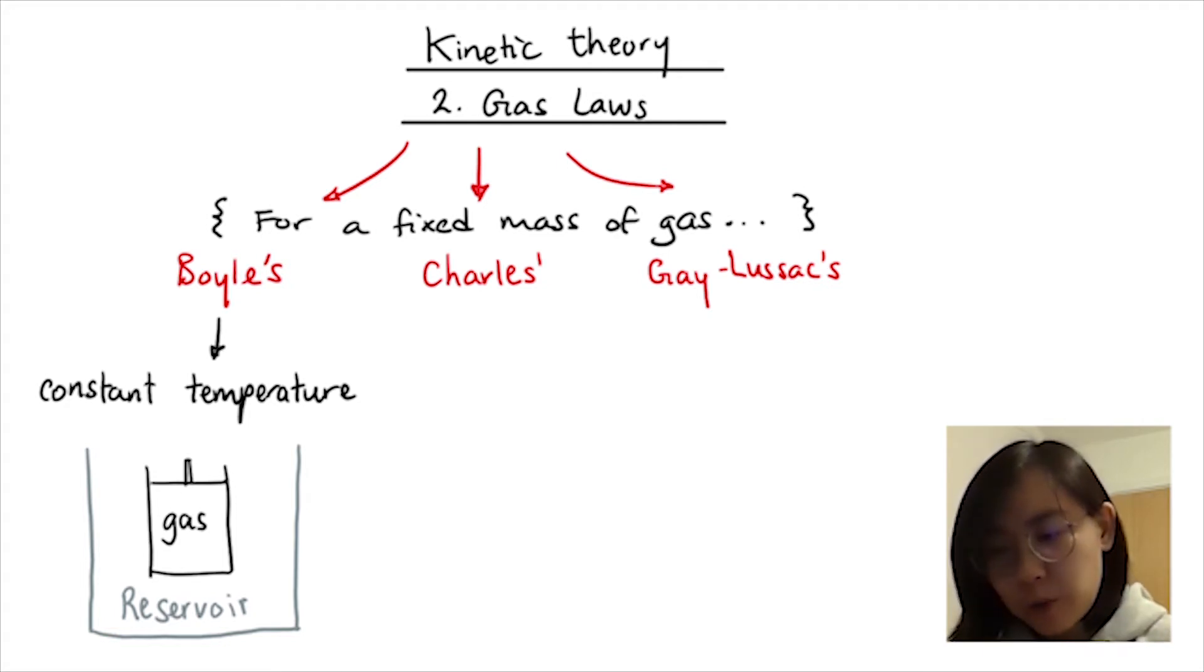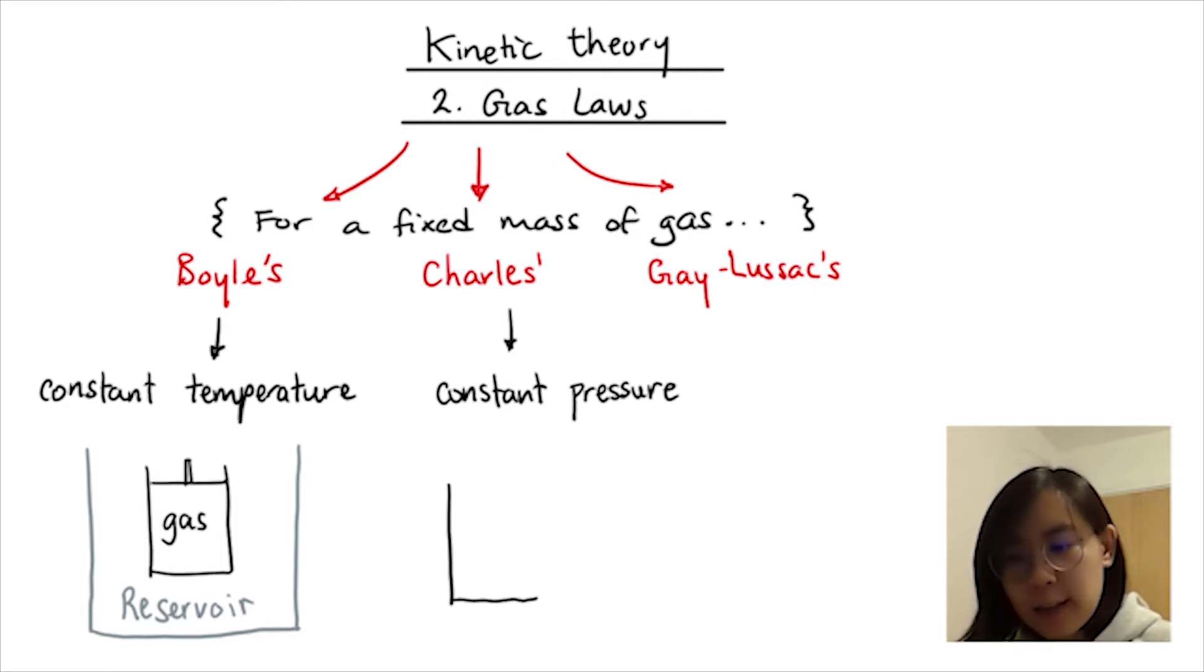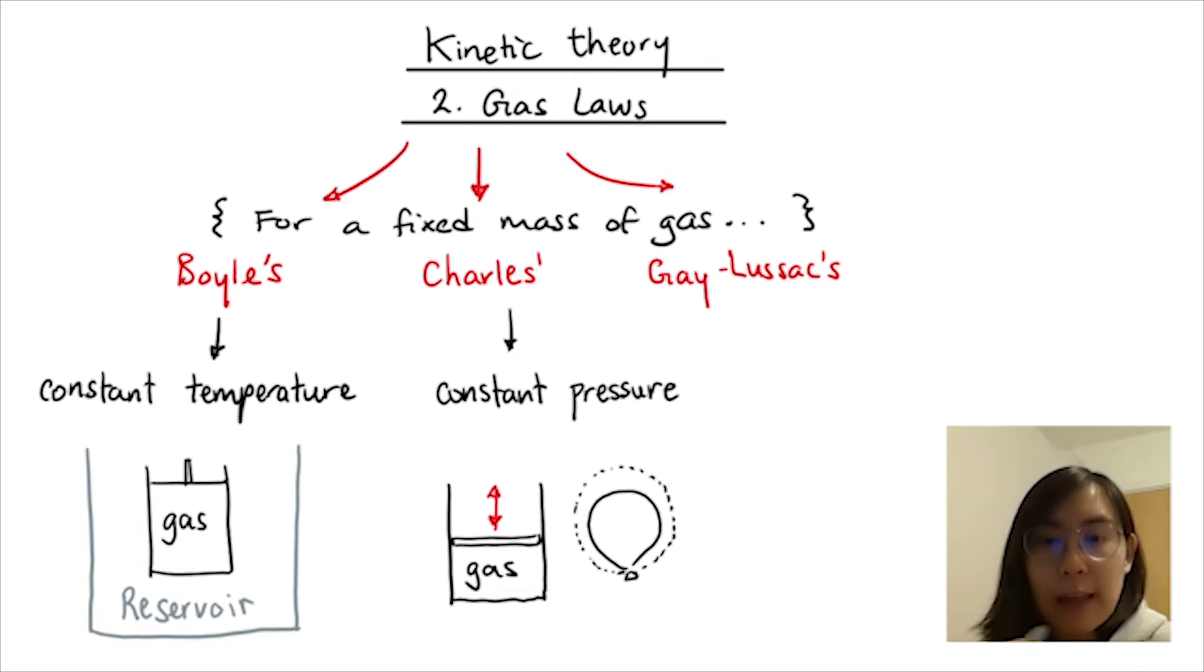For Charles' Law, we're talking about a gas at constant pressure and seeing how temperature affects the volume. So this gas must be allowed to freely expand and contract. That's kind of like putting a lid on a container but allowing the lid to slide freely. You can also think of a balloon where we're allowing the skin to inflate.